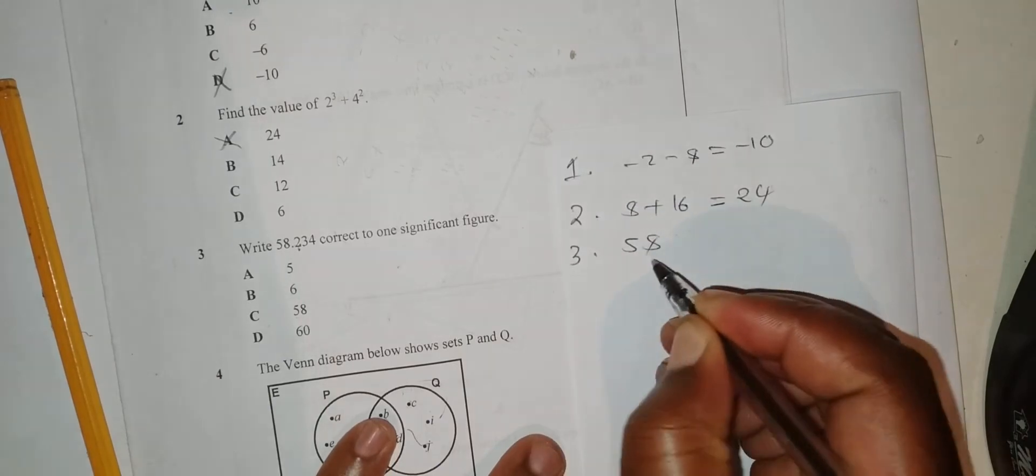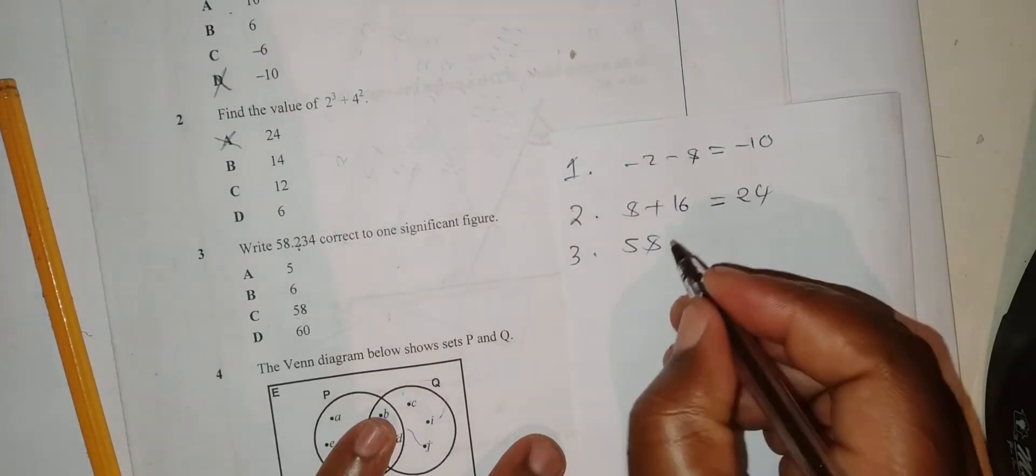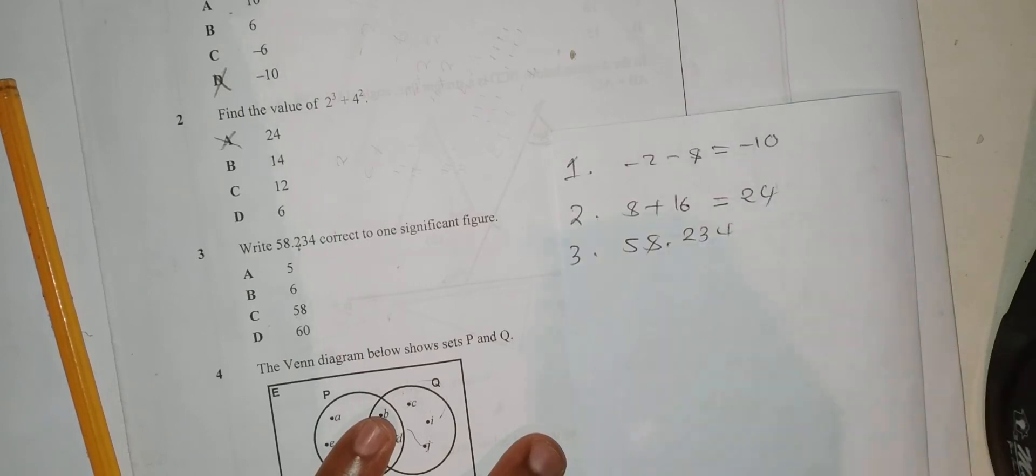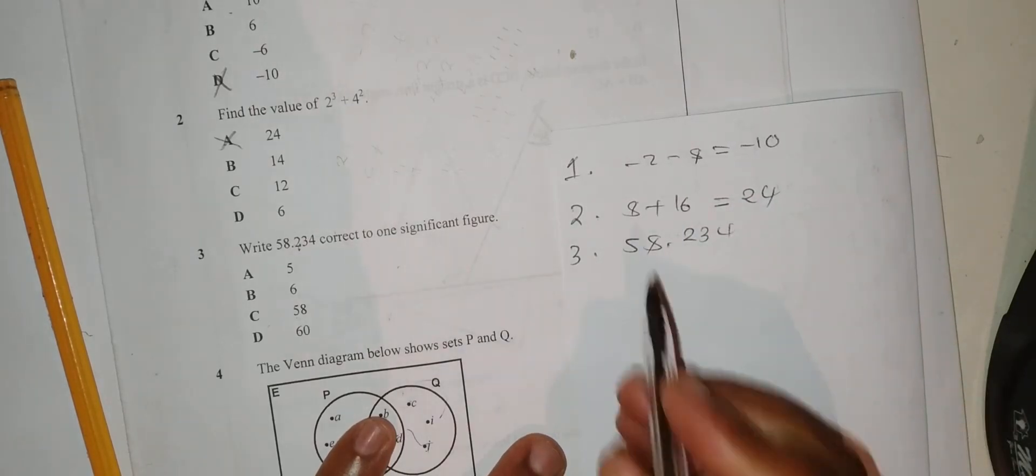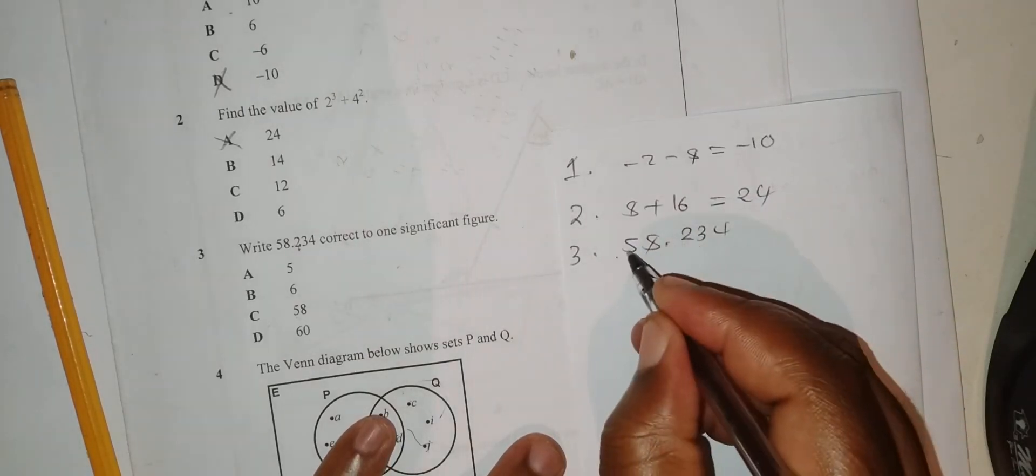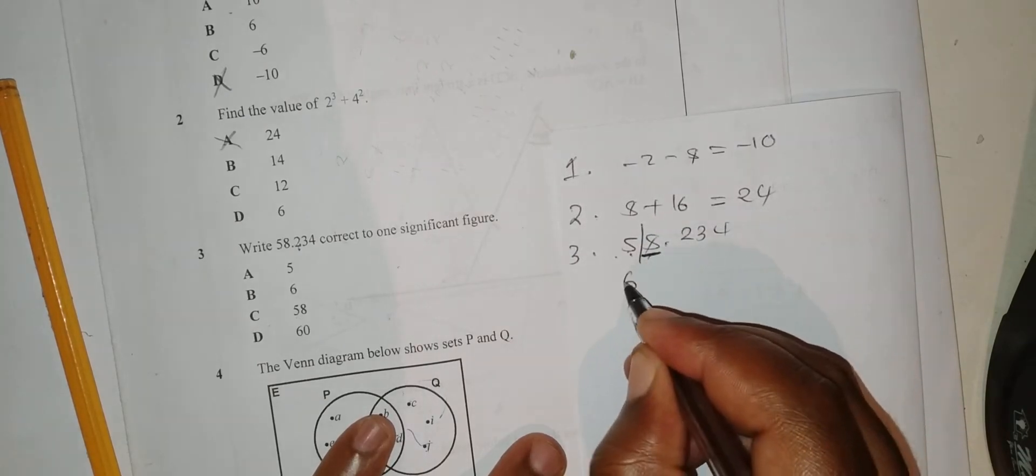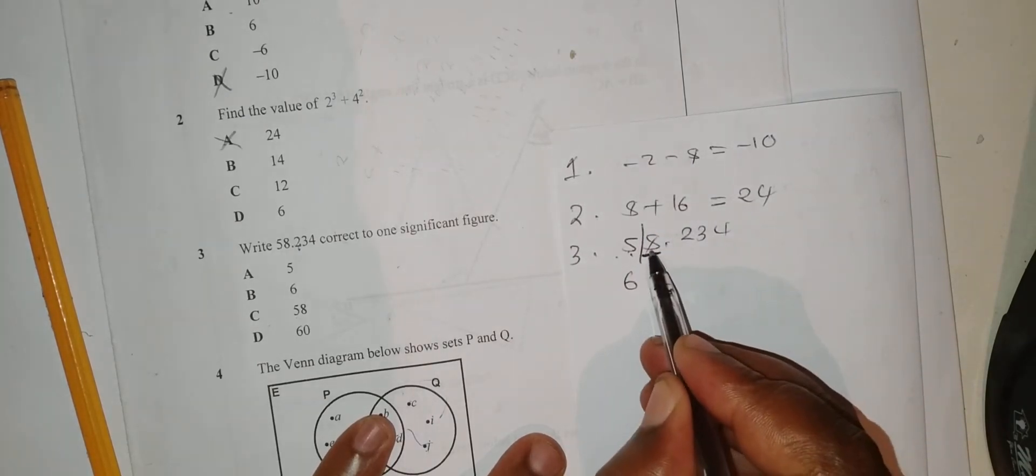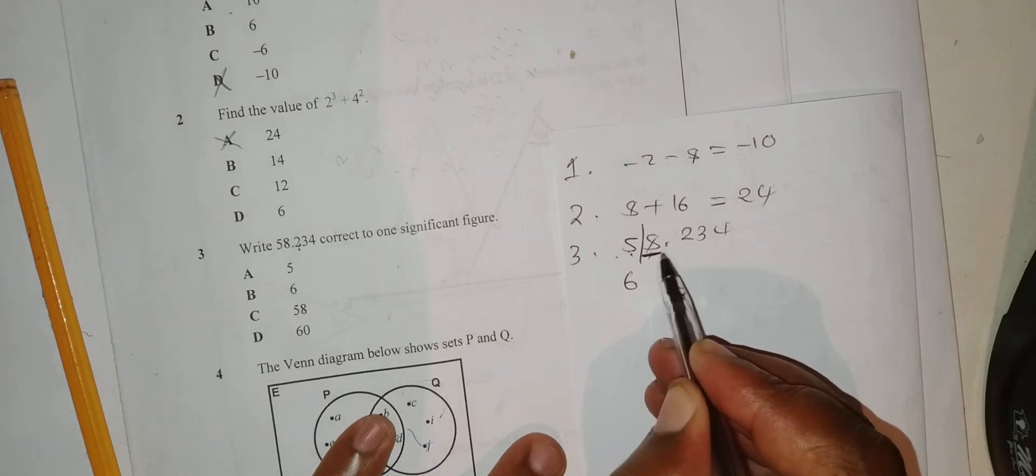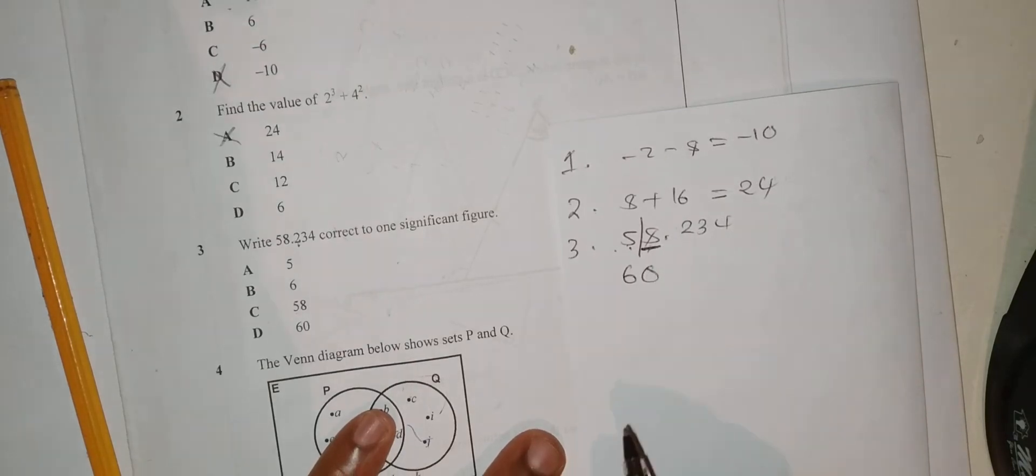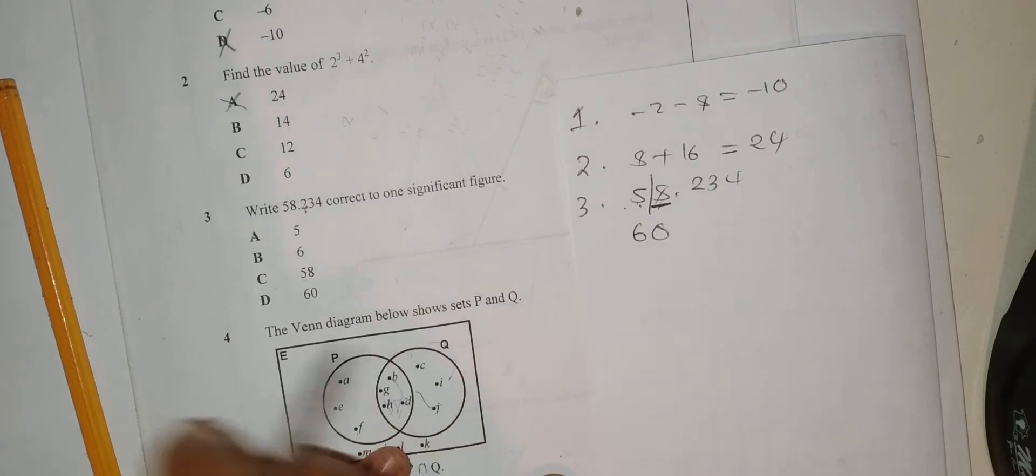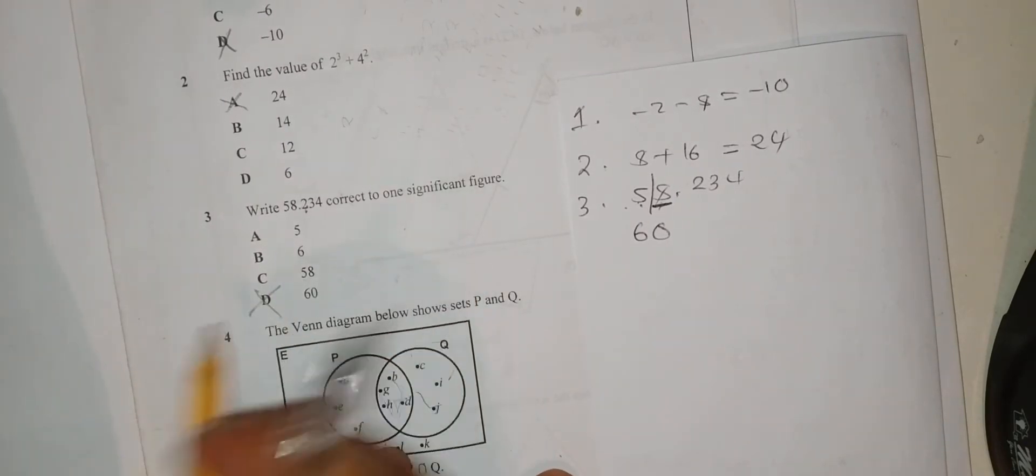Number 3: 558.234 to 1 significant figure. You start counting from the left hand side, say 1, consider this as 1 plus the 6, so I'll say 6. But I have a number before the point, so there's 1 zero. That is 600, which is D.